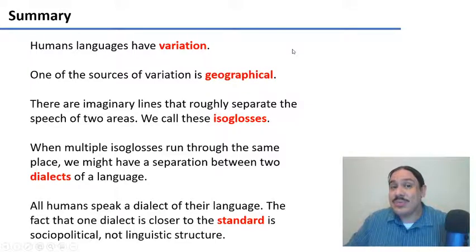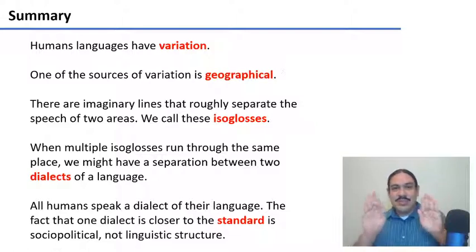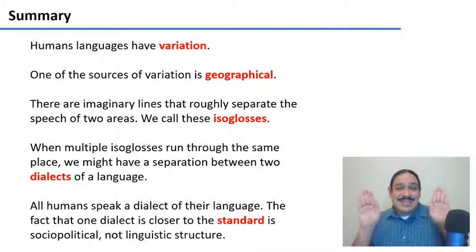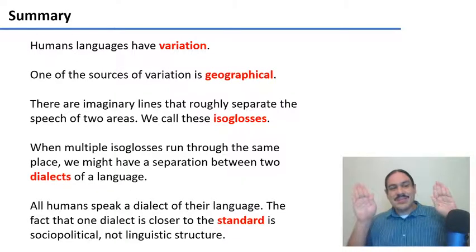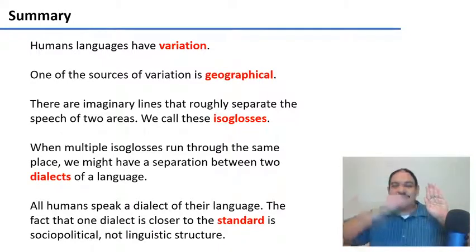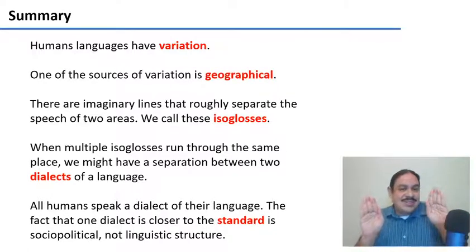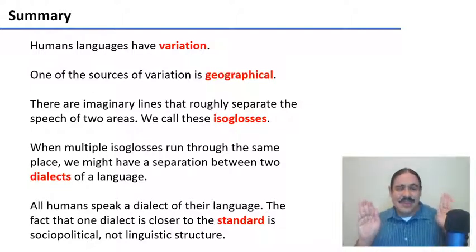In summary, human languages have variation. One source of that variation is geographical: if you have two groups that don't communicate much with one another, each one is going to develop its own quirks and features, and therefore become separated. We can draw a line between them that separates the features of A and B — this is an isogloss. If we have many different features with many isoglosses, then we can say they are different dialects of a language. And these dialects are equally valid — they're just different because they're geographically separated. There's nothing that makes one better than the other, other than politics, not linguistic structure.